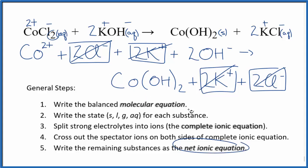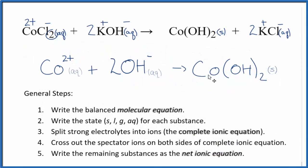I'll clean this up and write the states — here is the balanced net ionic equation for cobalt 2 chloride plus potassium hydroxide. Note that charge is balanced: we have 2 plus here, and 2 times 1 minus is 2 minus, so 2 plus and 2 minus gives a net charge of zero. On the product side, the neutral compound also has a net charge of zero, and if you count the atoms up, they're balanced too. This is Dr. B with the balanced net ionic equation for COCl₂ plus KOH. Thanks for watching.